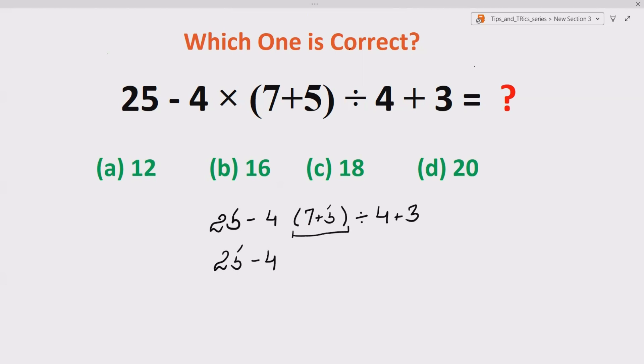We have to solve bracket. So 7 plus 5 gives us what? 12. So we get 25 minus 4 times 12 divided by 4 plus 3.